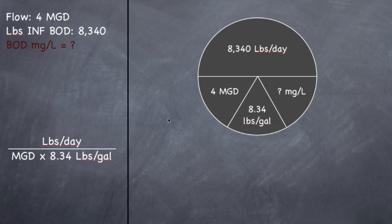So I want you to draw the pie and fill it in with the information, 8,340 pounds per day, which is from right here, 4 MGD from right here, 8.34 pounds per gallon, which is your constant. And what we want to find is the concentration in milligrams per liter. So if you take your pounds and divide it by 4 MGD and divide it by 8.34 pounds per gallon, you should get 250 milligrams per liter.